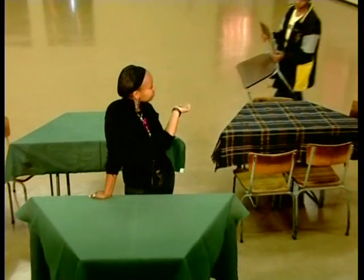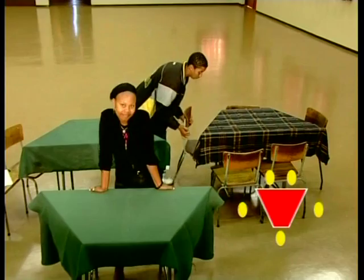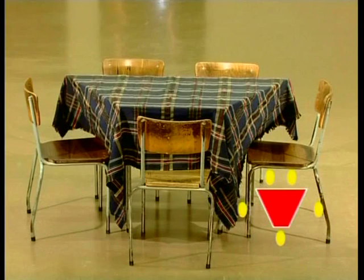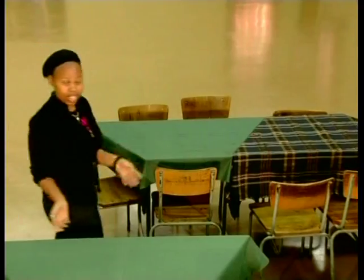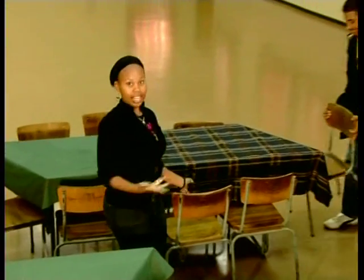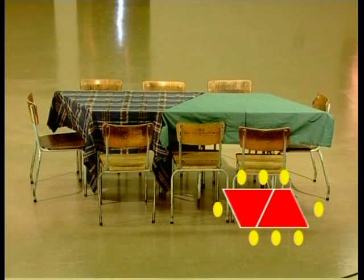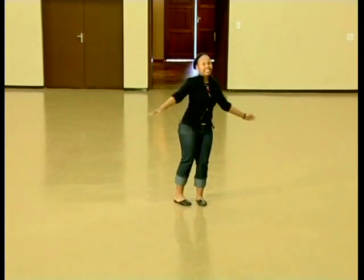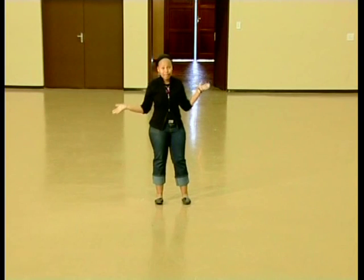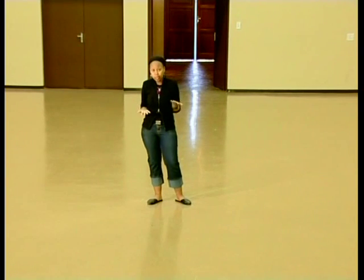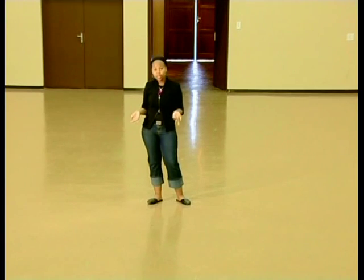We've realised that one table can seat five people, like this. And if we join two tables together, we can seat eight, like this. My mum wants us to arrange the tables across the hall in one straight line and she's expecting around a hundred people, so we need to know how many tables we're going to use.